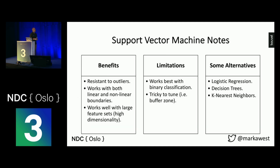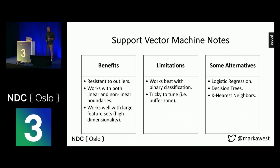Support vector machines are very resistant to outliers, they work well with linear and non-linear boundaries, and they're good with high-dimensional feature sets. But they can be a bit tricky to tune, and they work best with binary classification — basically saying true or false.